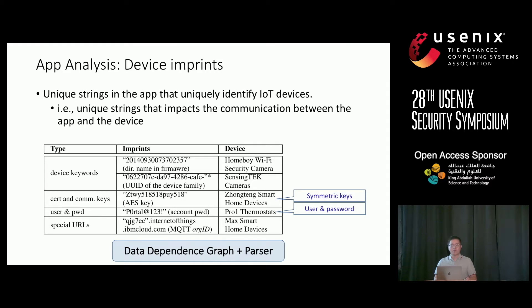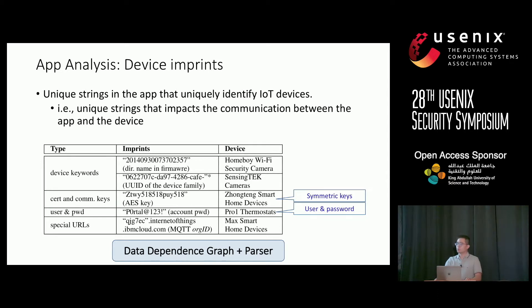The second information we get from the app is device imprints — unique strings in the apps that help identify the IoT device. These strings usually impact communication between the app and the IoT device. For example, if they communicate in an encrypted channel, they may share a symmetric key. If there is a username and account on the IoT device, it may appear in the mobile app. We extract such information to help identify devices and do cross-app analysis.